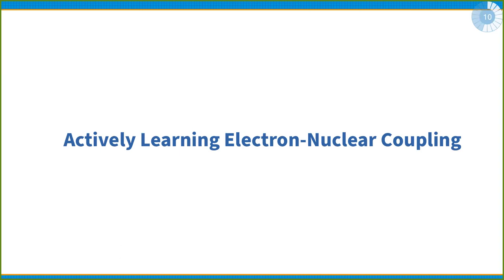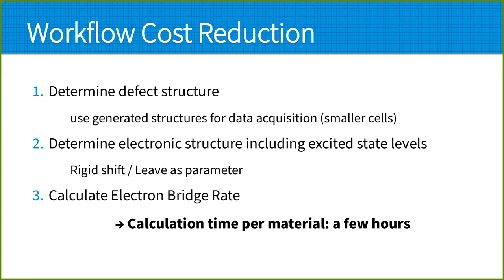That's why this seems like a good application for machine learning. What could we do to actively learn the electron-nuclear coupling? We have to think about how to reduce the workflow cost: we don't need to use as many defect structures per material and can use smaller cells just to generate training data. We may also not need to do excited state calculations for the training set, and we calculate the electron bridge rates as usual — reducing calculation time per material to a few hours.